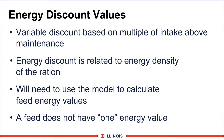Another important aspect are energy discount values. This also occurred in the 1989 value, but it was always constant for all feeds. Now in the new NRC, this will vary based on multiples of intake above maintenance. So as a cow eats more feed, she gets less actual energy per unit of dry matter from each amount of feed consumed. But because she's eating more feed, she is getting more energy. It also varies based on the energy density of the ration and the feed itself. Therefore, you will need to use the model to calculate a feed energy value for a dietary constituent based on these variables. Bottom line — a feed does not have one energy value like we had in previous editions.